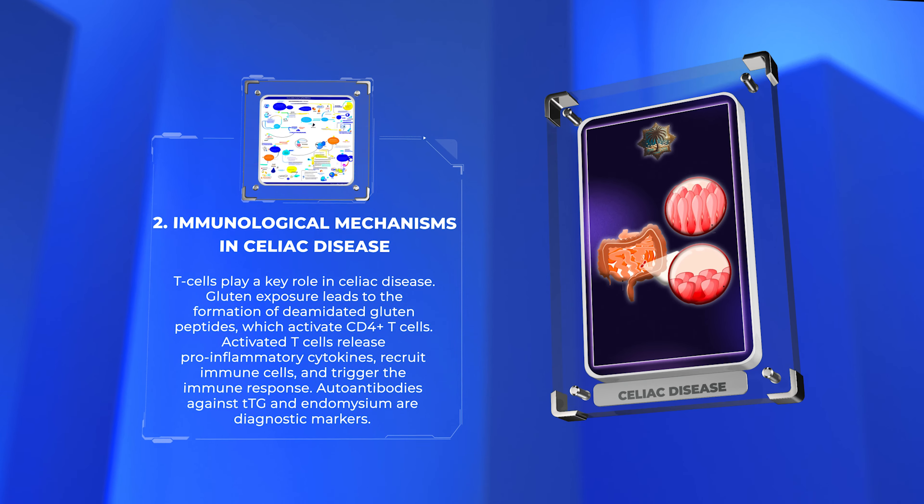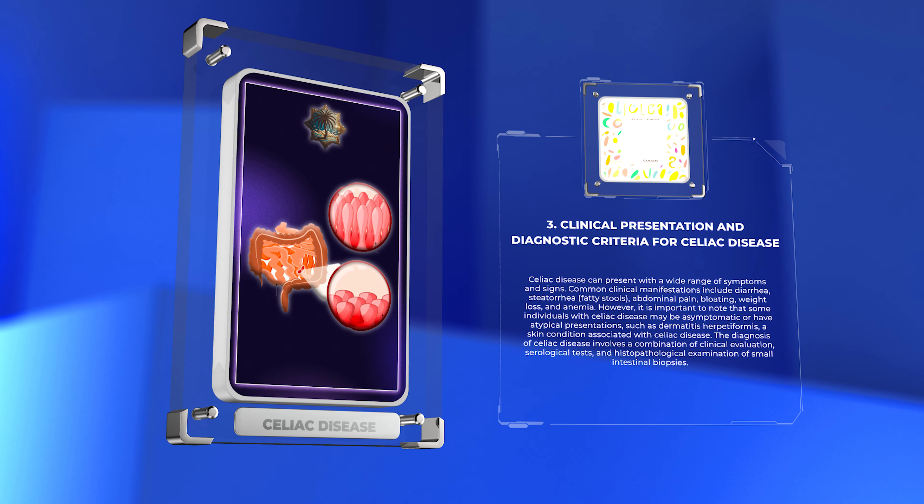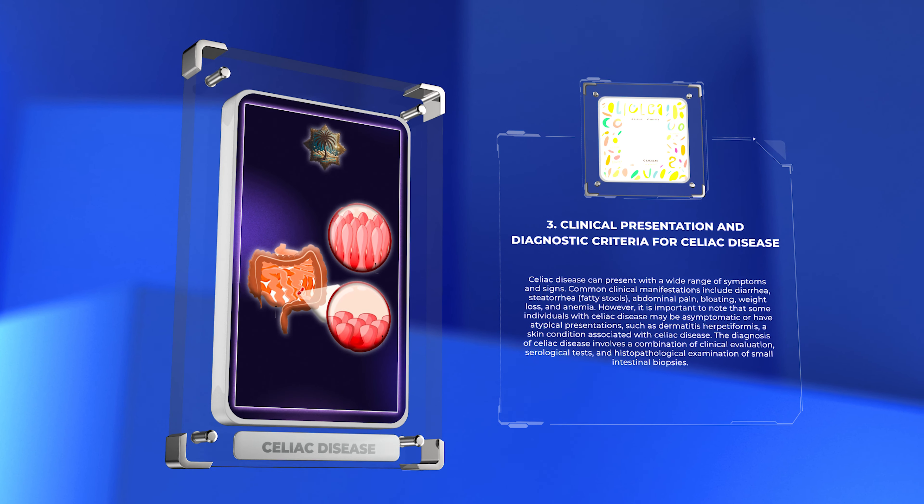Celiac disease can present with a wide range of symptoms and signs. Common clinical manifestations include diarrhea, steatorrhea, fatty stools, abdominal pain, bloating, weight loss, and anemia.